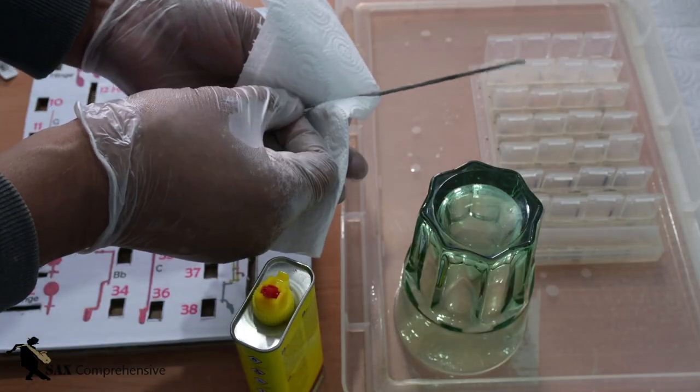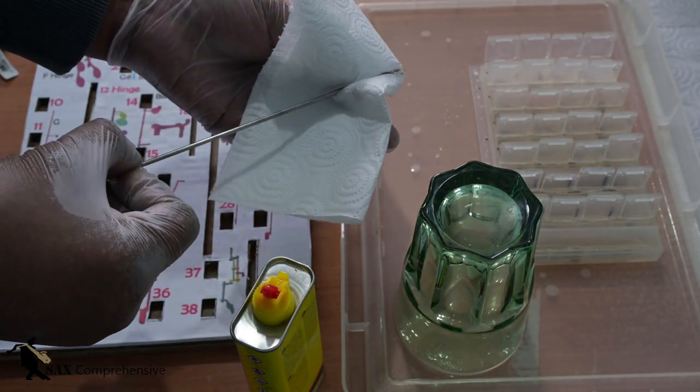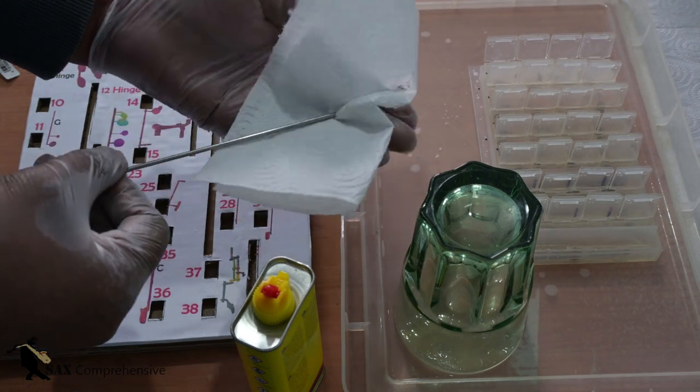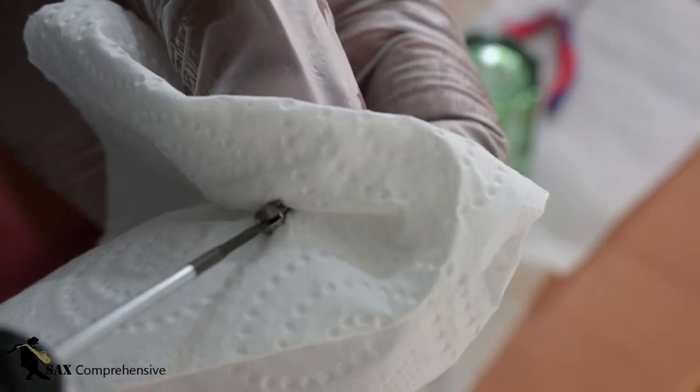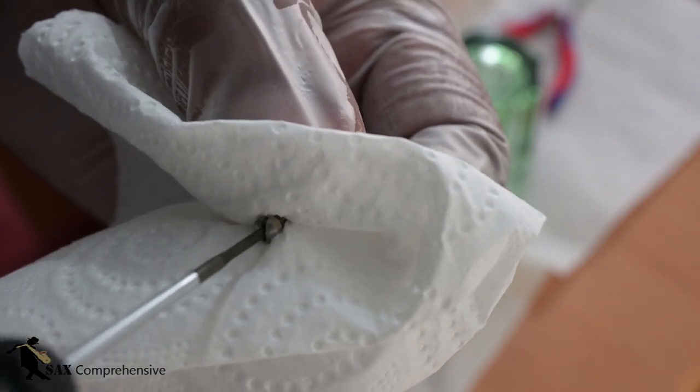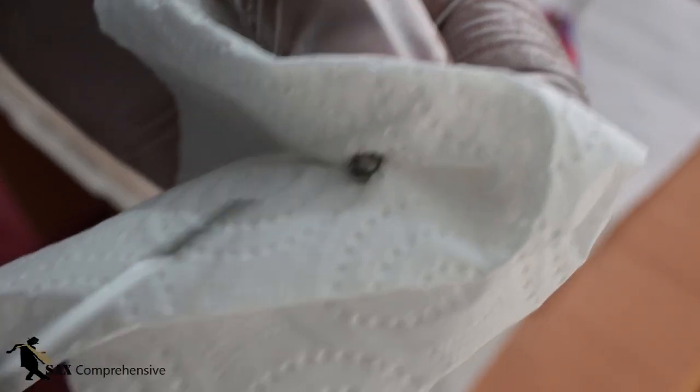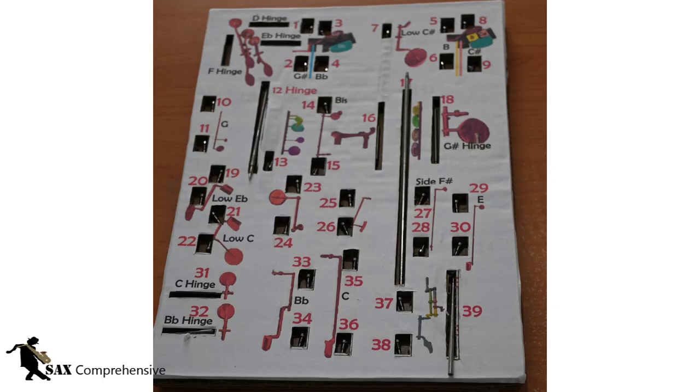Then one by one I wiped the grease off the pivot screws and hinge rods, especially from the threaded part and the slots where the screwdriver goes. Then I rinsed them off in water, dried them, and put them in my other organizer ready for when I reassemble the saxophone.